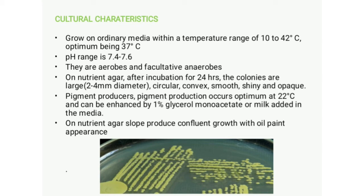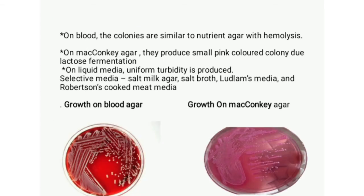On nutrient agar slants, Staphylococcus aureus produces confluent growth with an oil-paint appearance. On blood agar, colony morphology is similar to nutrient agar, but hemolysis (degradation of RBCs) occurs, especially when incubated under 20–25% CO₂. Rabbit or sheep blood agar shows more hemolysis than horse blood agar. Human blood is not suitable as it contains antibodies and inhibitors that prevent organism growth.